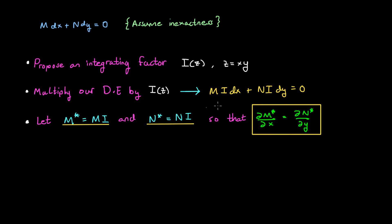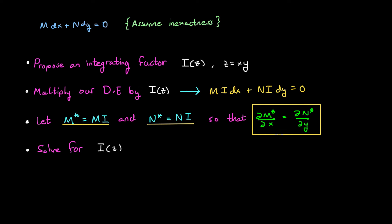Now, M times i is another function of x and y, as is N times i. So we let M* equal M times i, and N* equal N times i, so that the exactness relationship becomes an identity for this new differential equation. If this relationship is an identity, it implies that this new differential equation is, in fact, exact. So we're going to solve for i of z using this relationship.